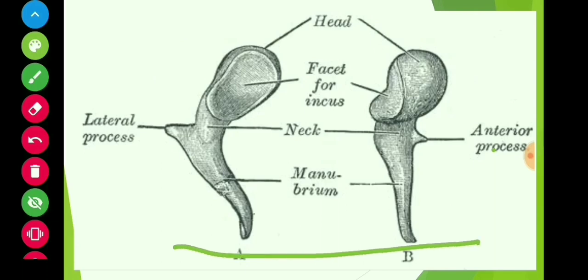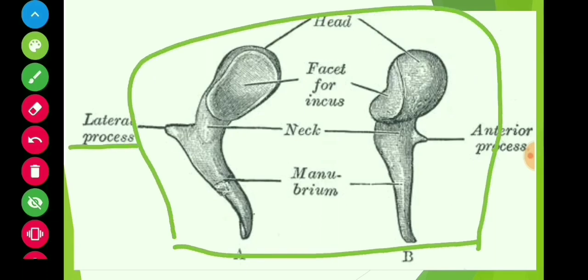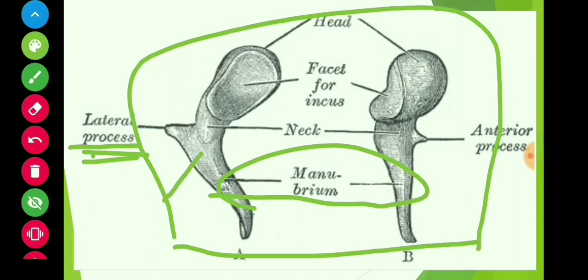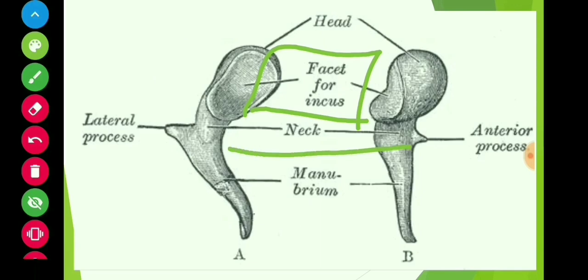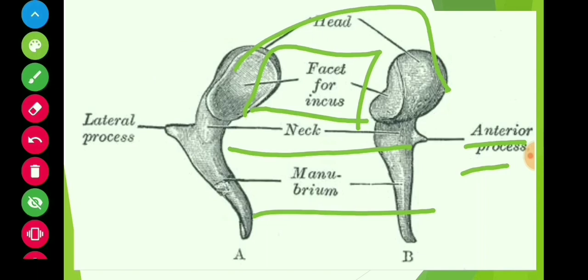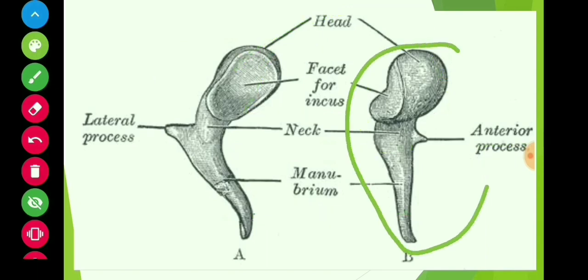This is the malleus bone. This is the lateral process which is grown outside. This is called the manubrium or handle of the malleus bone. This is the facet for incus, where the malleus and incus are attached. This is the anterior process, the neck of the malleus, and this is the head of the malleus bone.